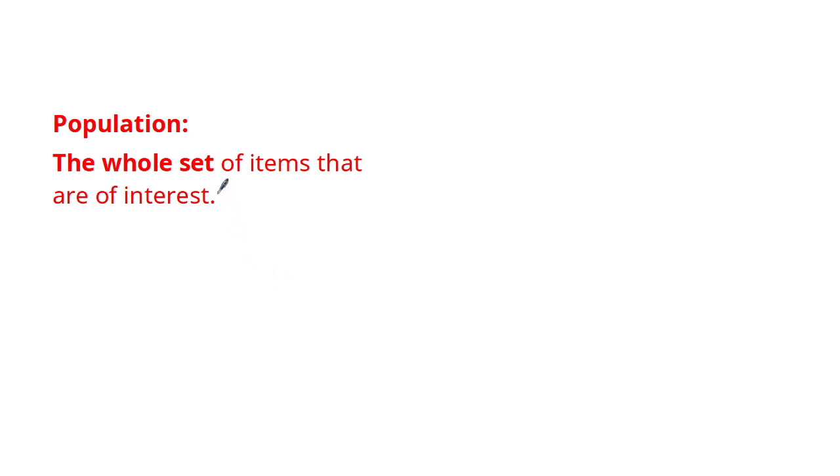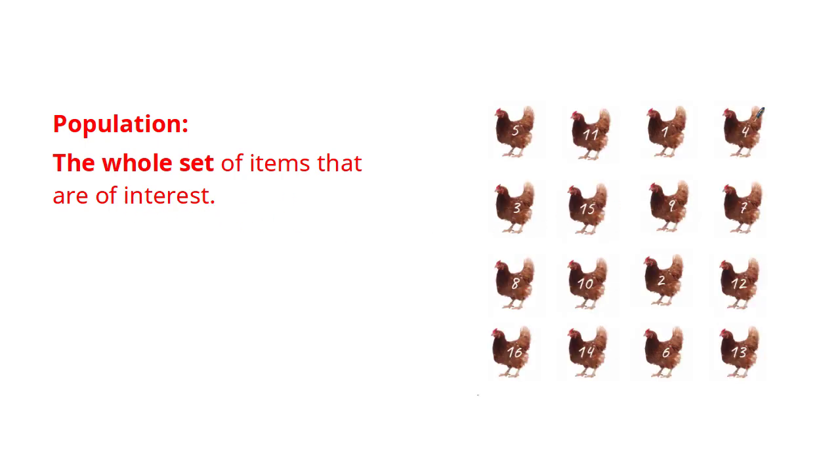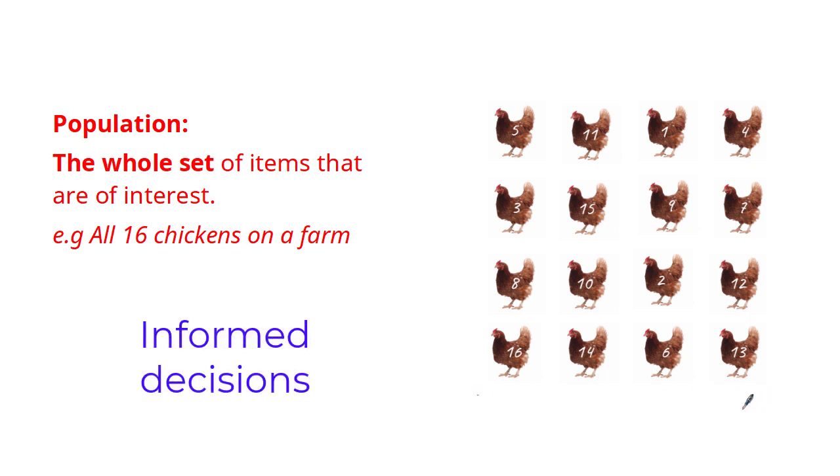Let's start off with the definition of population. Population is seen as the whole set of items that are of interest. An example of this would be all 16 chickens on a farm. Populations are one of the most important parts of statistics because they give us the data that we need to make informed decisions.